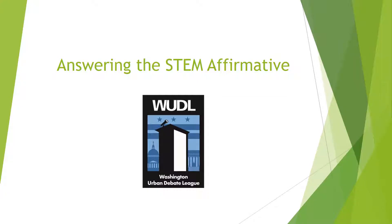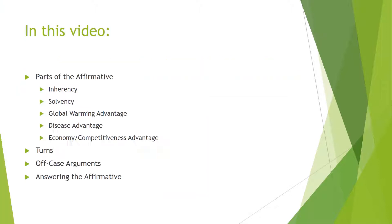Hello and welcome. In this video, we'll go over how to answer the STEM affirmative. First, we'll go through the parts of the affirmative one by one, from inherency and solvency through the global warming, disease, and competitiveness advantages. Then we'll talk about some turns available to the negative, how to use off-case arguments, and then walk through how to do this speech by speech.